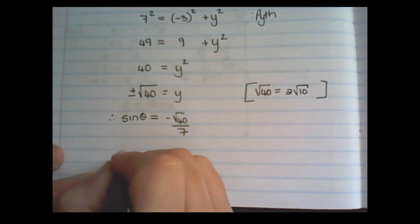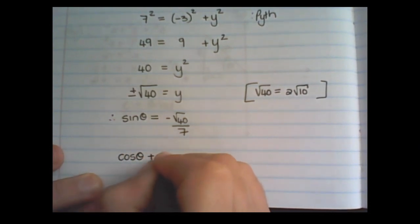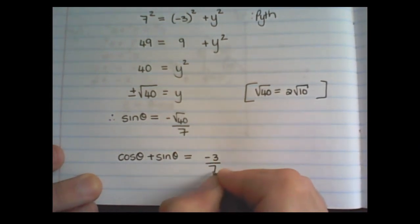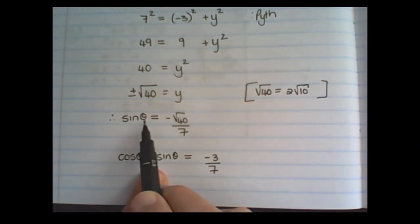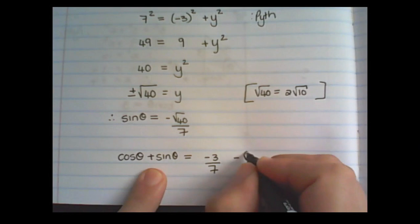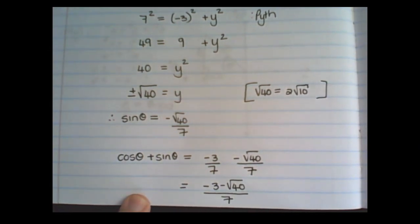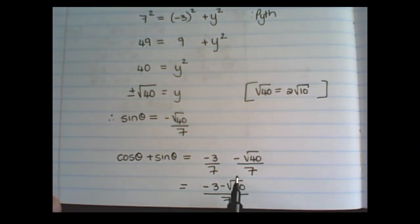And now I can simplify the question. Cos θ was given as negative 3 over 7. I want to add the sin θ which is negative square root of 40 over 7. And for now we don't have to simplify this because we want to solve without the use of a calculator. It is okay to leave this as your final answer. Please do not feel the need to force the issue to create a simpler fraction. This is perfectly fine.